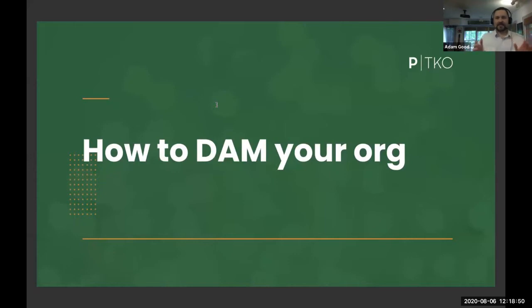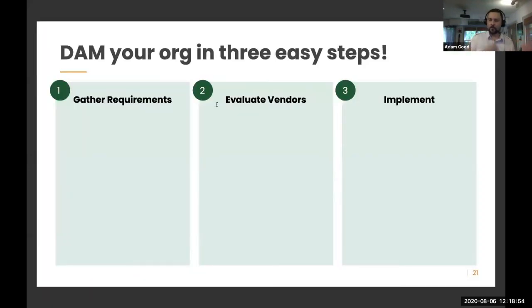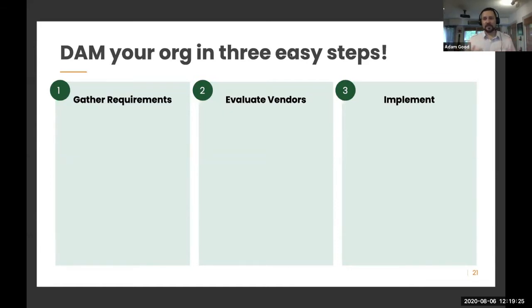So how do you DAM your org? If you want to move to a new DAM or improve the one you have, there are three big steps or phases to follow. First is gathering requirements — really getting into what you're trying to do with the DAM and why. Second, once those are solidified, you evaluate vendors and look at particular platforms that provide different types of features. Third is implement — starting to actually roll out the DAM. It's important to follow this general arc rather than just saying 'this software has the right price and the right storage, let's go.'